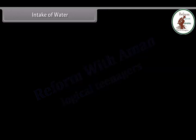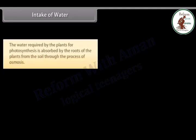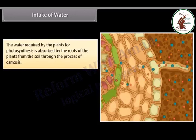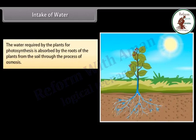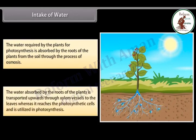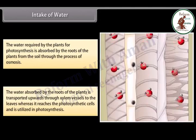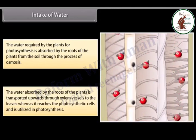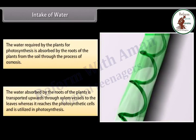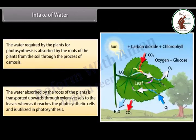The water required by plants for photosynthesis is absorbed by the roots from the soil through the process of osmosis. The water absorbed by the roots is transported upwards through xylem vessels to the leaves, where it reaches the photosynthetic cells and is utilized in photosynthesis.